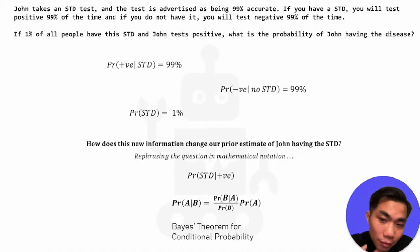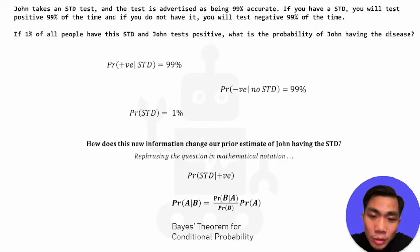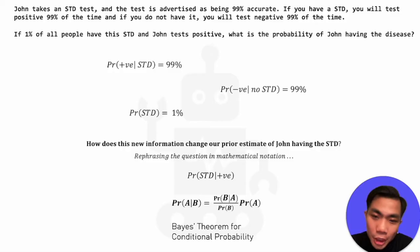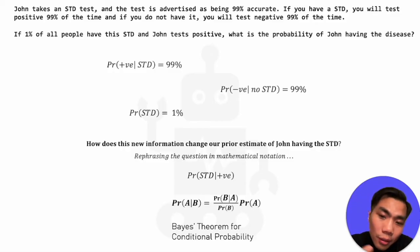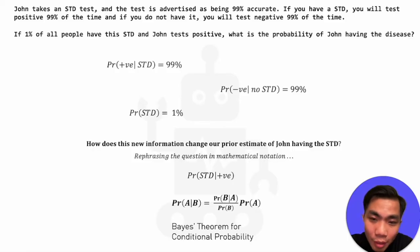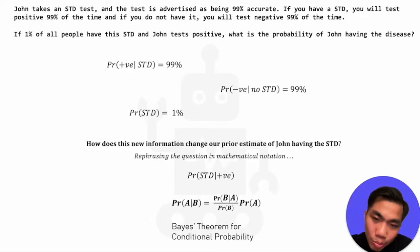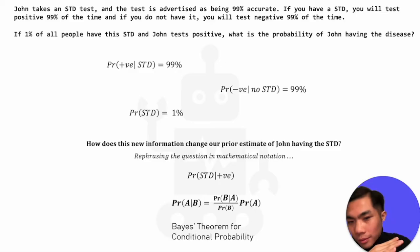Bayes' theorem states that the probability of A given B is equal to the prior — the probability of A on its own — scaled by a fraction. This fraction is the probability of B given A, normalized by the probability of B. We are taking the prior probability and scaling it by this fraction, and this will come in later in the video.